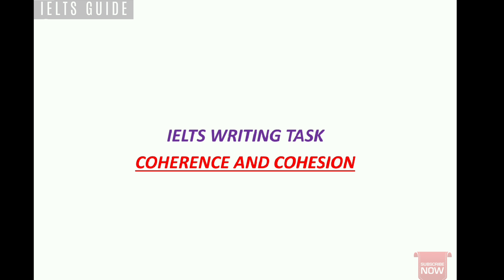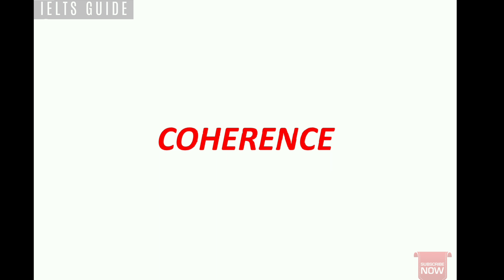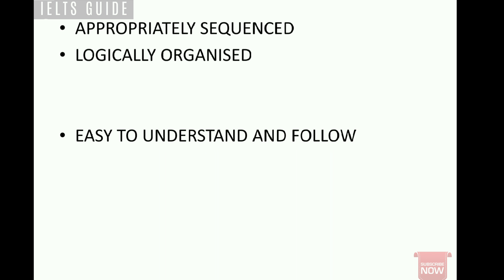In this video I will give you examples and tips on how to achieve a good band score for coherence and cohesion. Let's get started. First, let's talk about coherence. Coherence means your answer should be appropriately sequenced and logically organized.